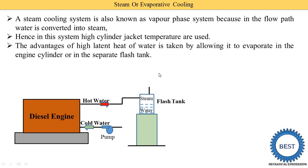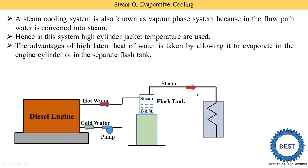The steam coming out from the flash tank is supplied to the condenser. The condenser is a type of heat exchanger where the steam is condensed — meaning condensation takes place — that is why it is called a condenser.